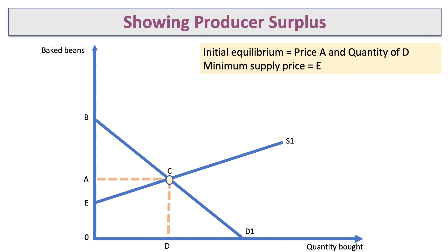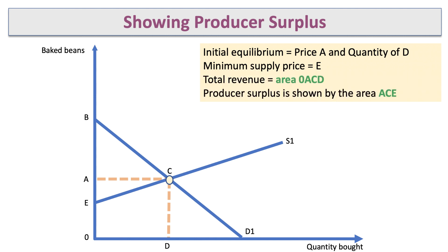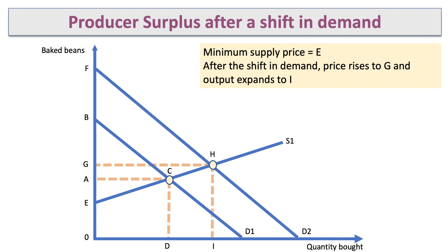The market clearing price is A, so the producer is getting OA for each unit sold and is selling D units. The minimum supply price they would need is E, but they're getting A, so the area above the supply curve and below the price is the producer surplus. Therefore, total revenue is the area OACD, of which producer surplus is shown by the area ACE.